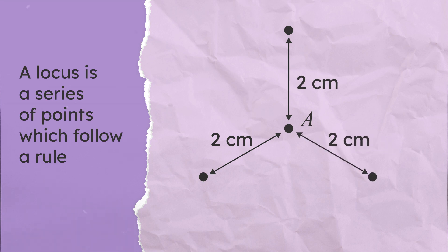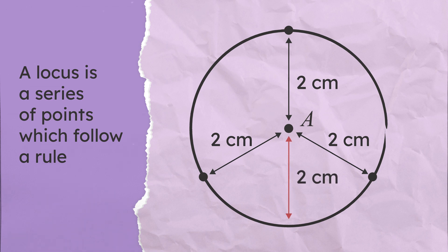If we continued, we would eventually draw a circle with a radius of 2 cm, with a center at A.